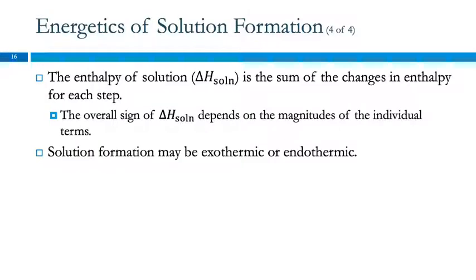The enthalpy of solution — the heat of forming the solution — is the sum of those three changes: separating the solvent, separating the solute, and putting them together. Two of those are positive and one is negative. The overall sign of delta H depends on the magnitudes of those individual terms. So when a solution forms, it may be exothermic or endothermic. The solution can become colder as it absorbs energy from the surroundings, or it may release heat, becoming warmer, as it gives off energy to the surroundings.